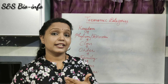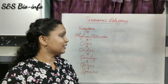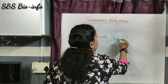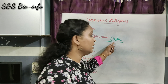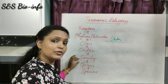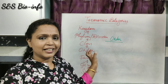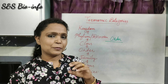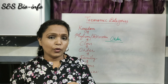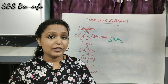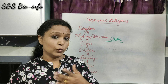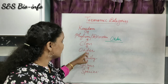The next taxonomy category is Order. Order is a group of closely related families. There is a specific feature in connection with order: the order comprises related families, but they have fewer similarities and more differences.